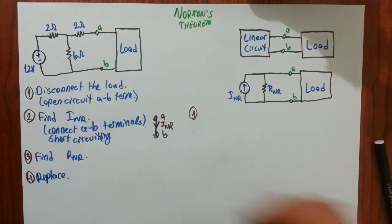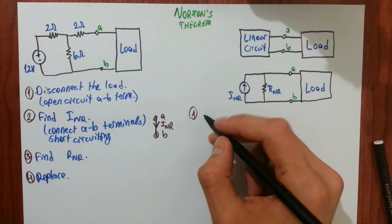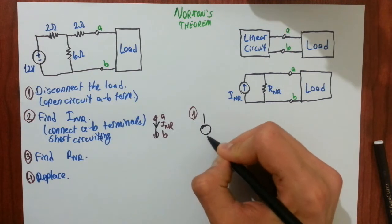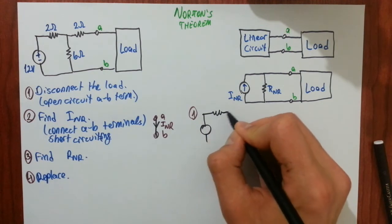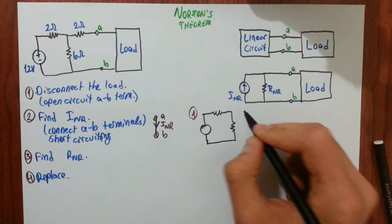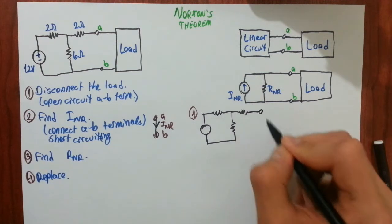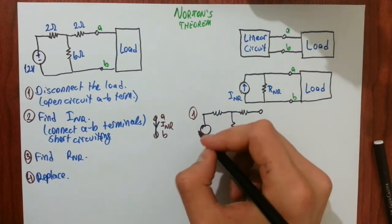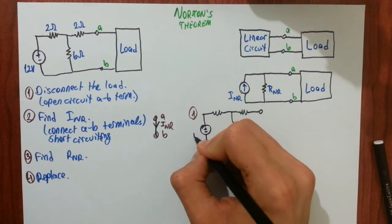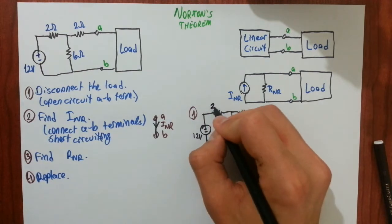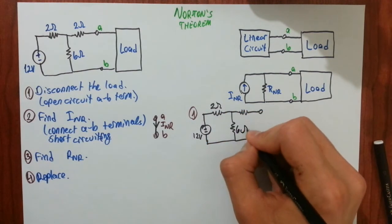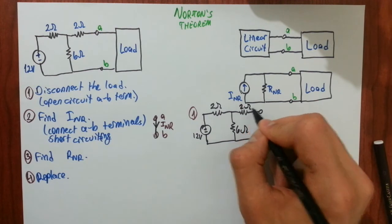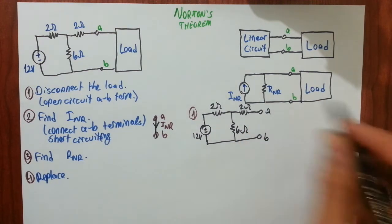Let's start with the first step. I will disconnect the load and I will redraw the circuit for you. Here we have 2 ohms, 6 ohms, and 2 ohms. Here A and terminal A. Here terminal B. Drawing may look a little messy. Sorry for that. Here you have your resistances. Terminal A, terminal B.